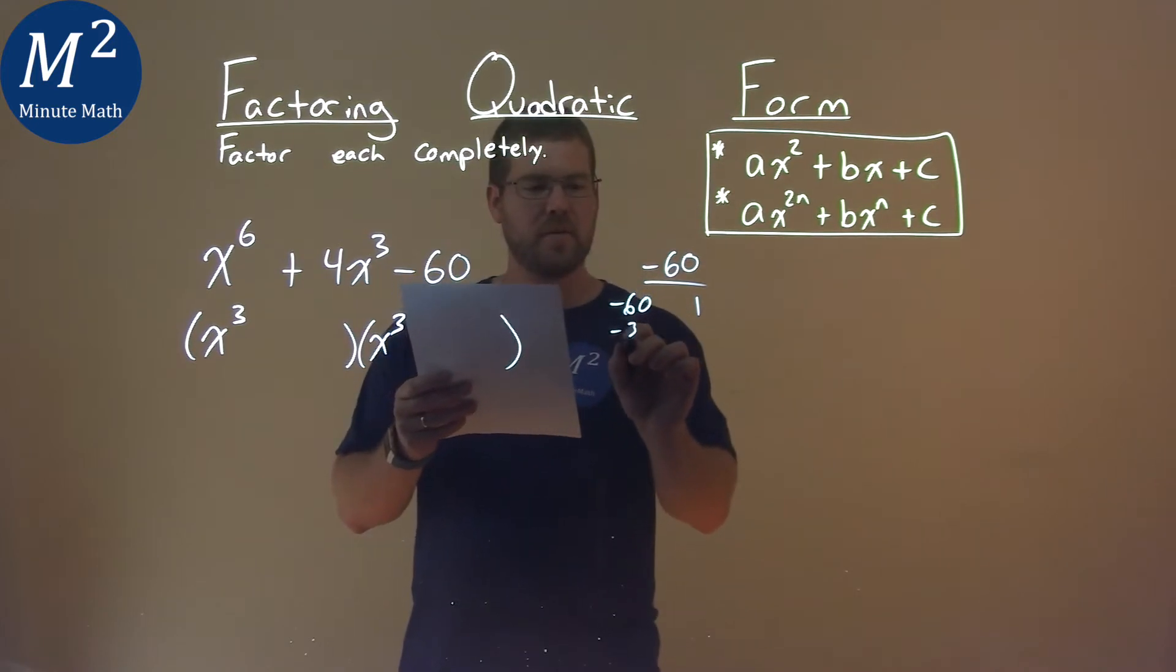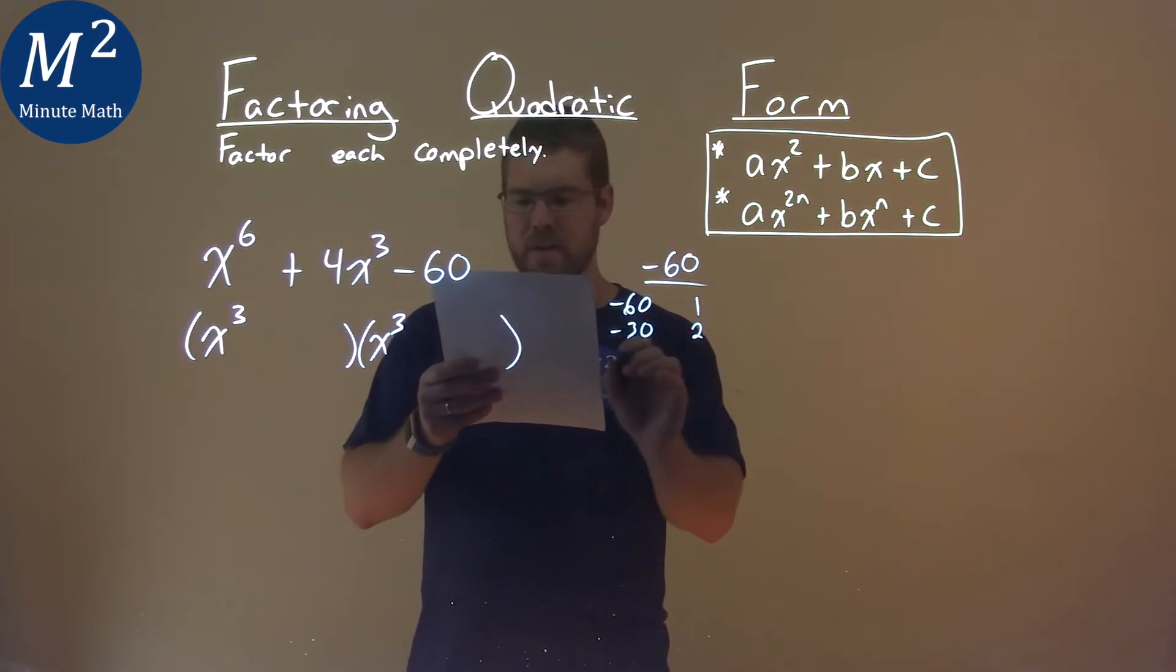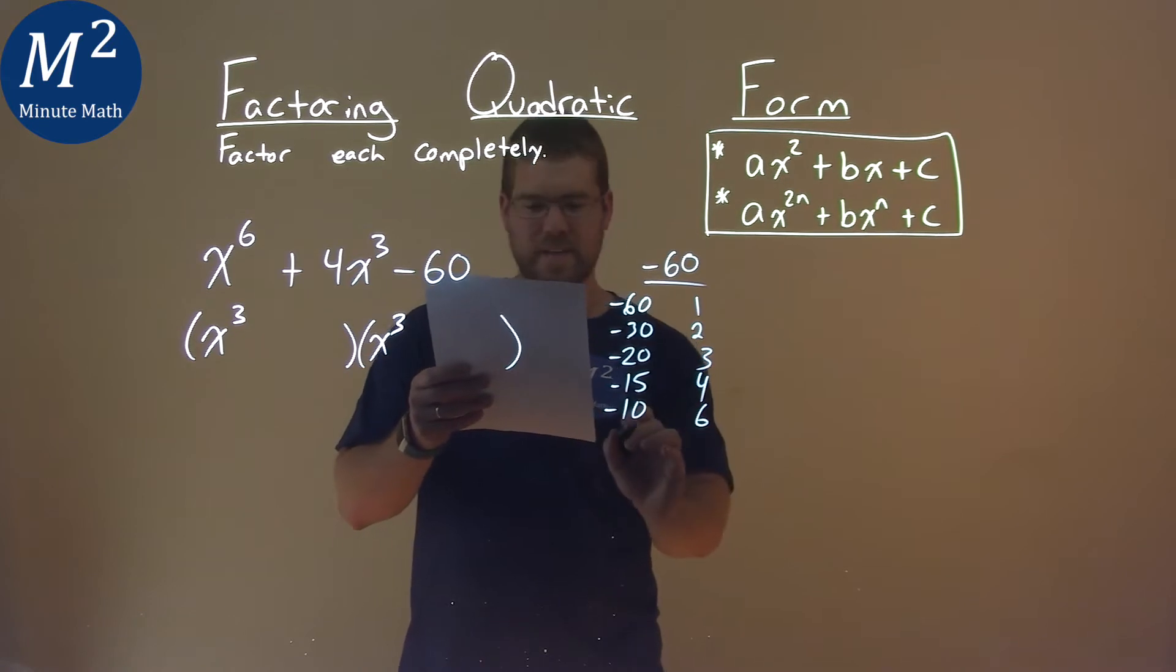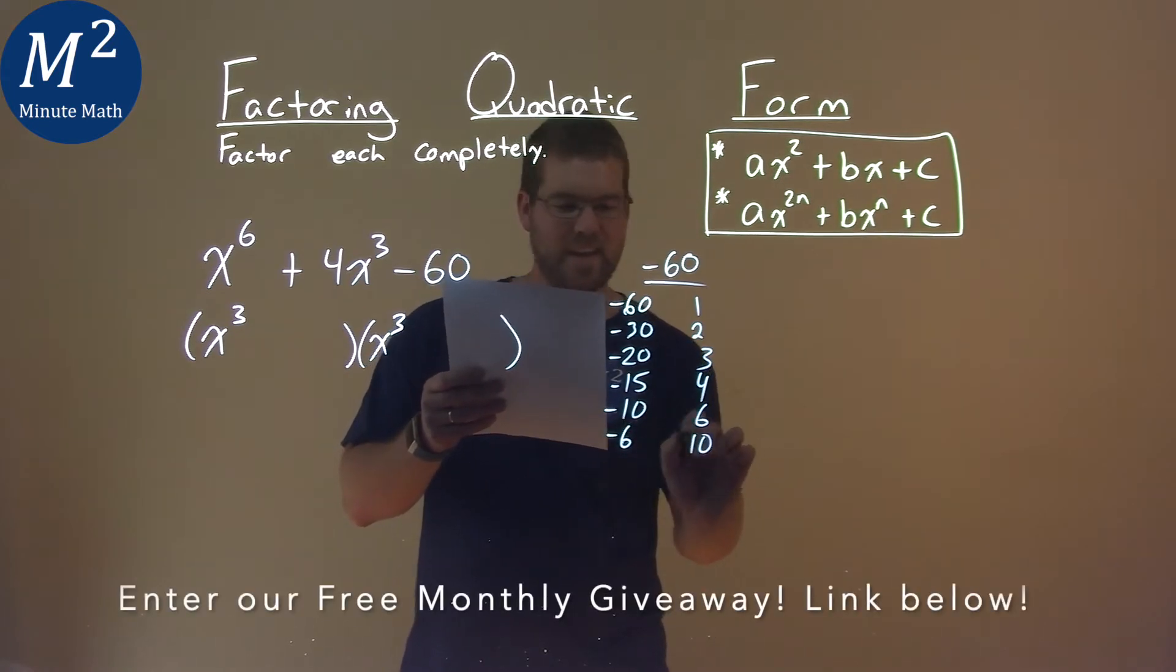So, negative 60 and 1, negative 30 and 2, negative 20 and 3, negative 15 and 4, negative 10 and 6, negative 6 and 10, kind of going reverse now,